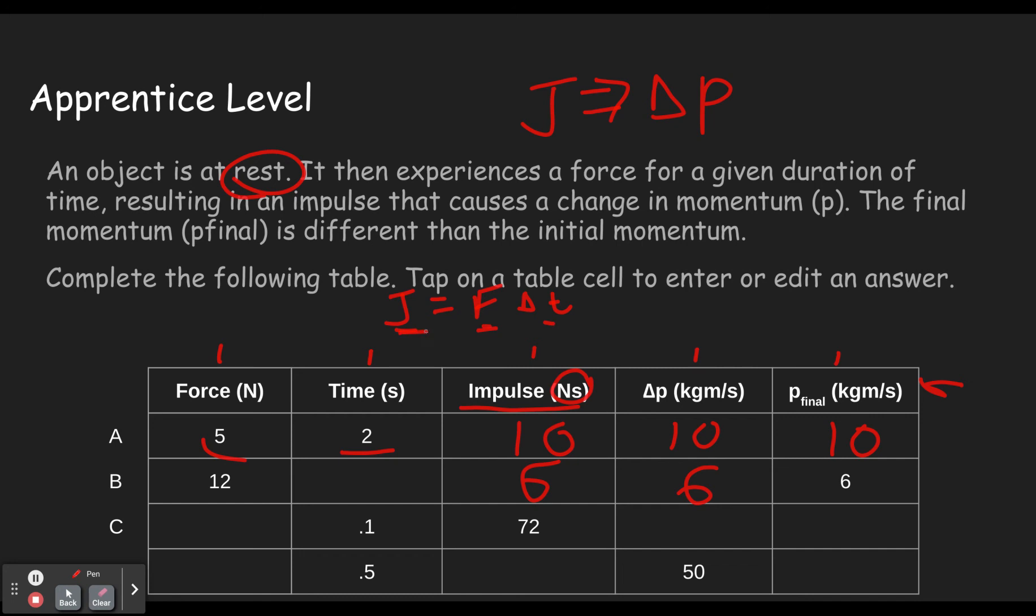We have to have something times twelve equals six. Or we could rearrange our equation dividing both sides by force to leave change in time by itself. So we get change in time equals impulse divided by force. So impulse divided by force, six divided by twelve gives us 0.5. If you need to use your calculator for some of the ones they give you, feel free.